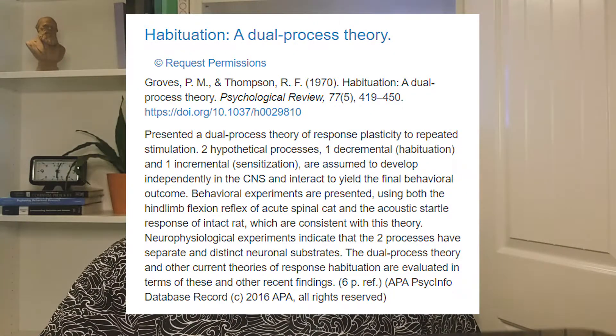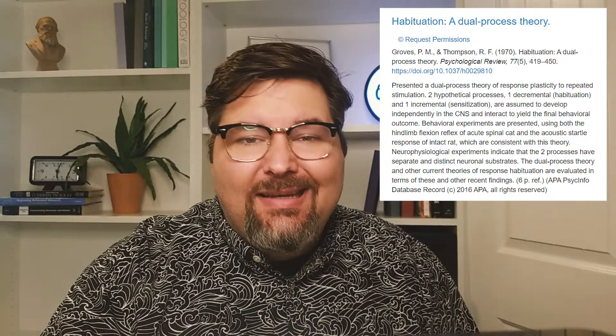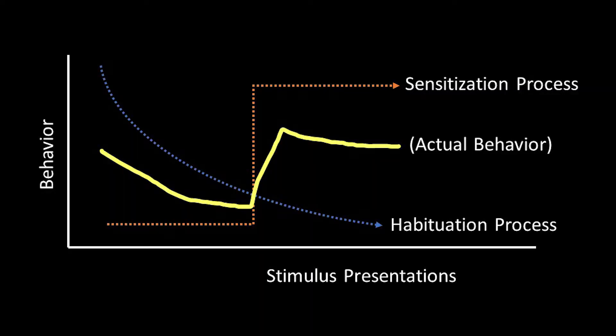This suggests that there are different processes at play. In 1970, Groves and Thompson proposed a dual-process theory to explain sensitization and habituation. According to the theory, when you first encounter a stimulus, it activates two processes at the same time: the habituation process and the sensitization process. One causes a decrease in responsiveness, while the other causes an increase in responsiveness. The total amount of responsiveness in the behavior is the sum of these two processes added together.